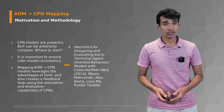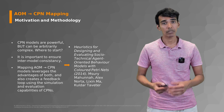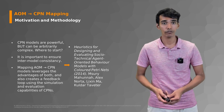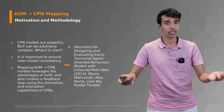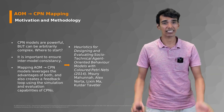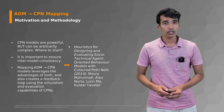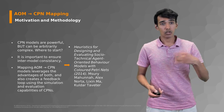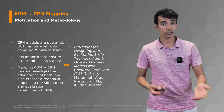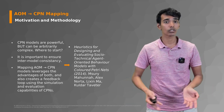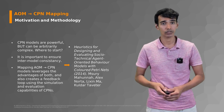Another thing to consider is that it's very important to ensure intermodel consistency. So if you have an AOM model and a CPN model that are modeling pretty much the same thing, it makes sense to keep them consistent with each other. If you start with an AOM model, you can leverage the advantages of both and also create a feedback loop using the simulation and evaluation capabilities of CPNs.